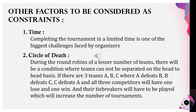Circle of Death: during the round robins of a lesser number of teams, there will be a condition where teams cannot be separated on a head-to-head basis. If there are three teams A, B, and C where A defeats B, B defeats C, and C defeats A, all three competitors will have one loss and one win. Tiebreakers will then have to be played, which increases the number of matches in the tournament.